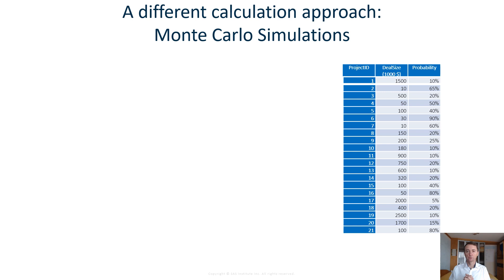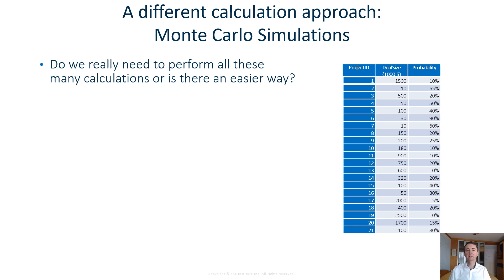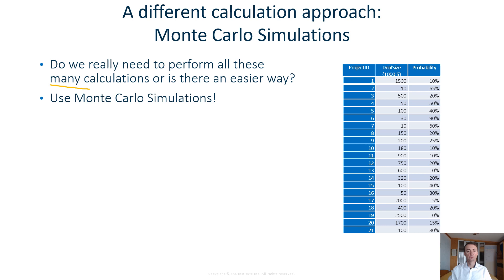Now we would like to study whether there is a different approach to get this calculation. The question is, do we really need to perform all these many calculations? We saw that for 21 projects, this was already more than 2 million potential outcome scenarios. If the list of projects increases, we very easily get to the point where the number of potential outcomes grows exponentially into the millions or billions. An easier way is to use Monte Carlo simulations, which follow the approach that you do not have to run all scenarios — you just have to simulate a few selected cases, which still gives you quite a clear picture.